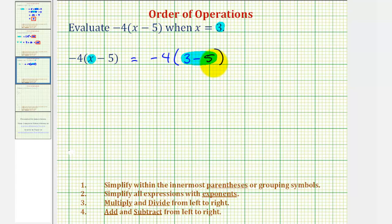And since three minus five is equal to negative two, this simplifies to negative four times negative two. And since a negative times a negative is a positive, negative four times negative two equals positive eight.